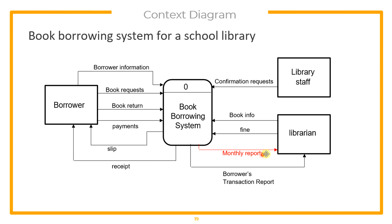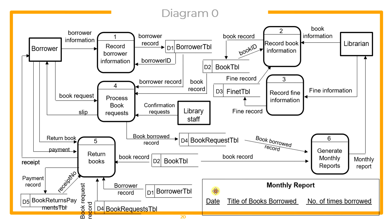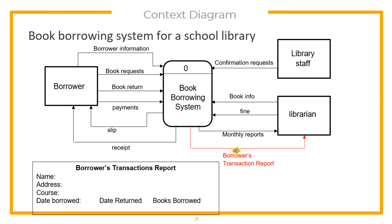Then we have monthly reports. In a monthly report, it should display or print the date the book was borrowed, the title of books being borrowed, and how many times those books were borrowed. To get the date, we retrieve it from the book request table, where all borrowing information is recorded. The title of books borrowed is found in our book table, and the number of times borrowed is also from the book request table.